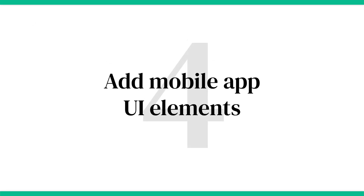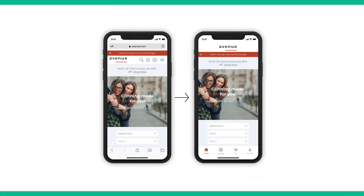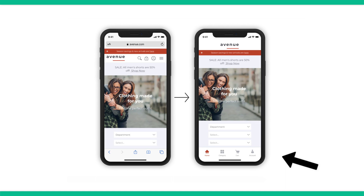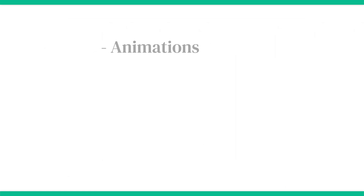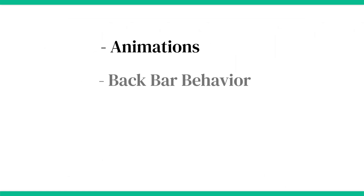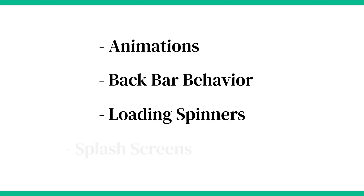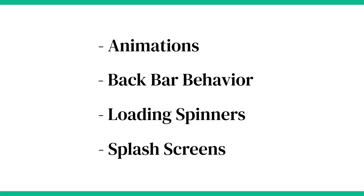Step number four is add mobile app UI elements. Set up the UI elements that will encase your site's content in the app. These include the tab menu at the bottom of the screen, along with navigation settings and elements such as animations, black bar behavior, loading spinners, splash screens, and more. All of this can easily be configured within the MobiLoud app builder dashboard.